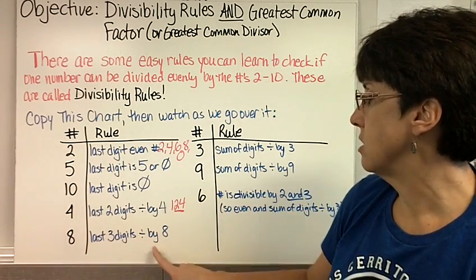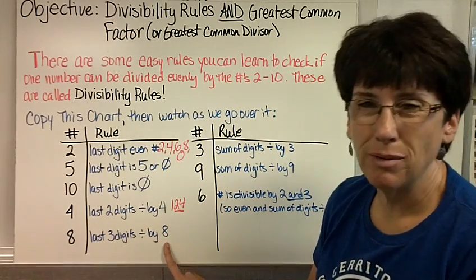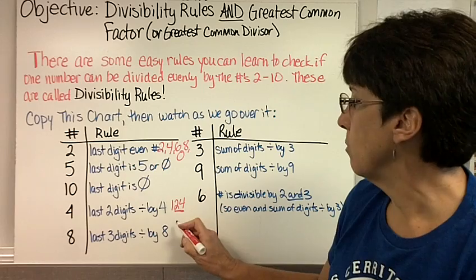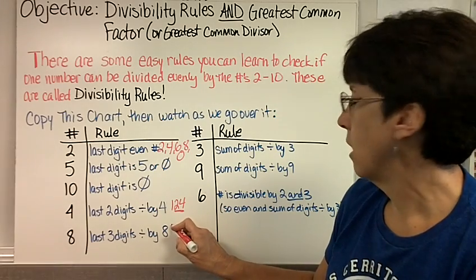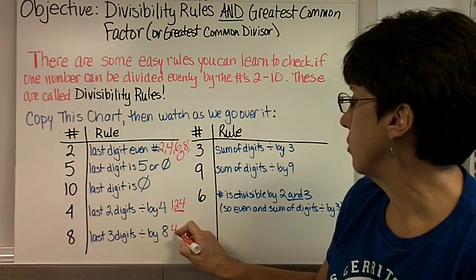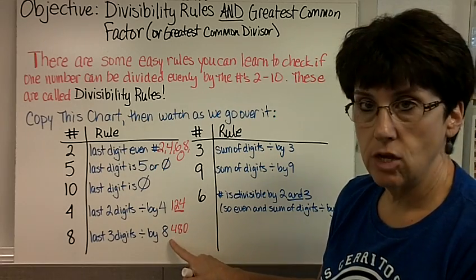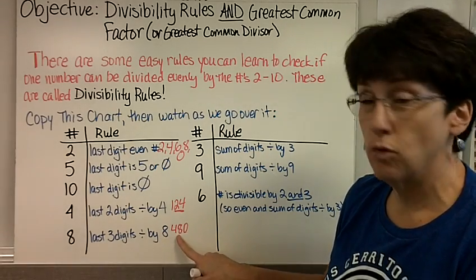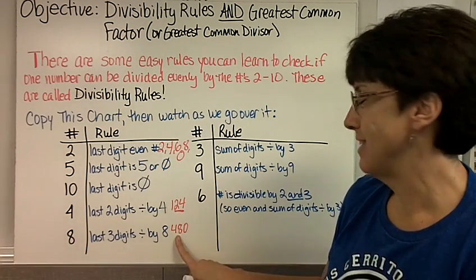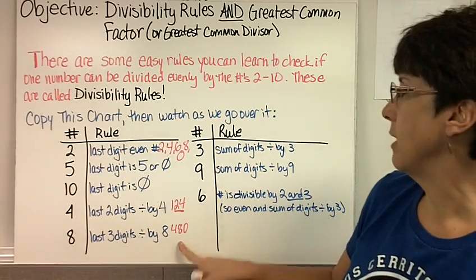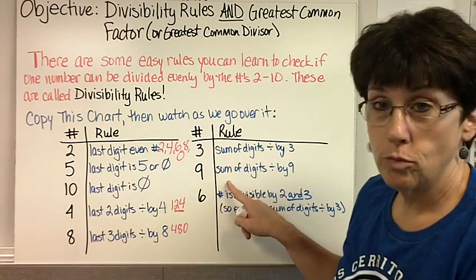For 8, it's the last 3 digits divisible by 8. This is probably the hardest one because you still have to divide into 3 numbers. But if I have the number 480, I check, does 8 go into 480? Well, does 8 go into 48? Yes, it does, and so it would also go into 480 because of the 0.